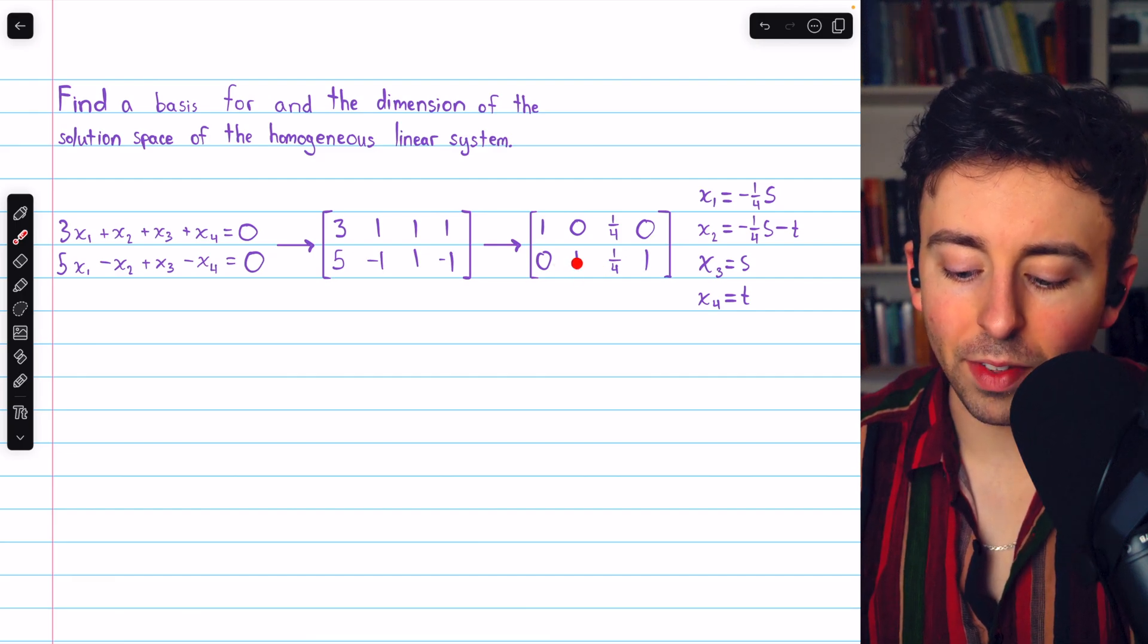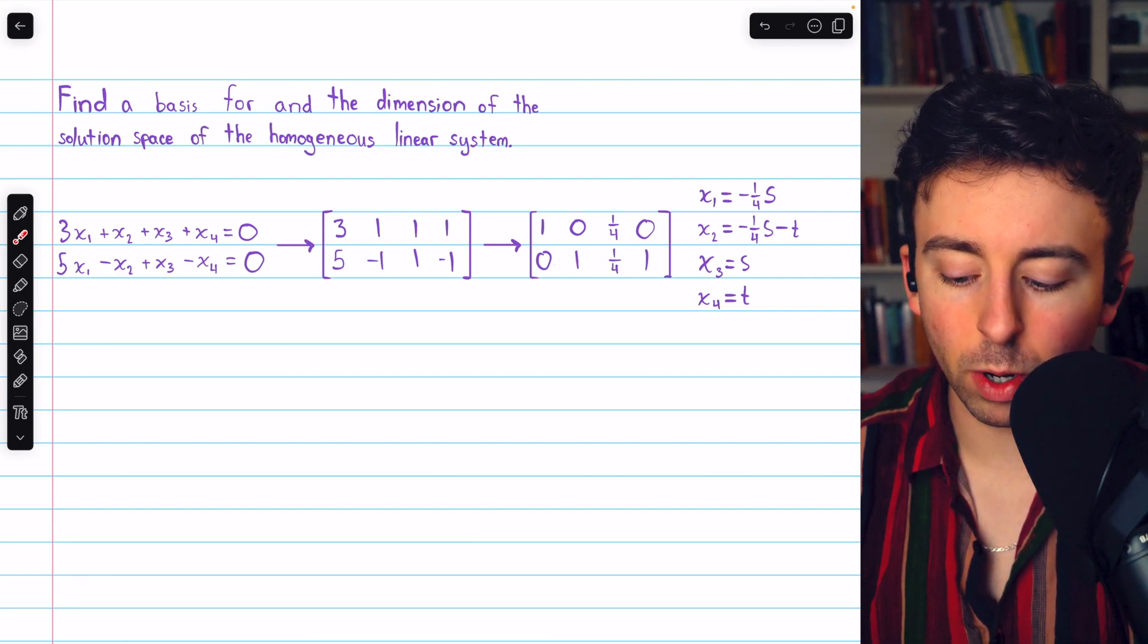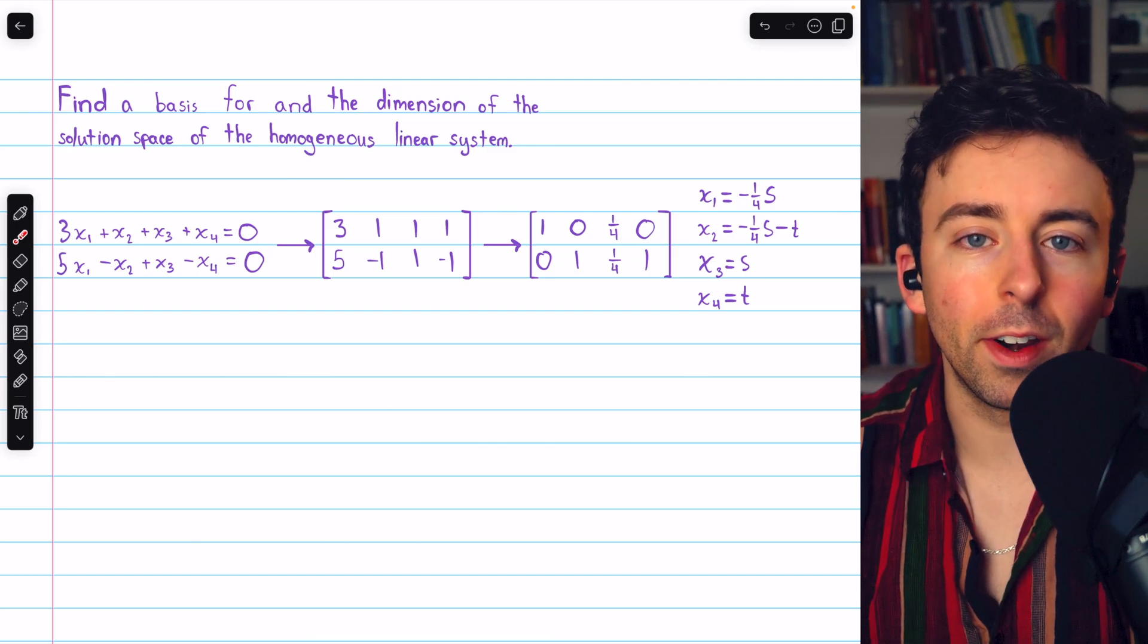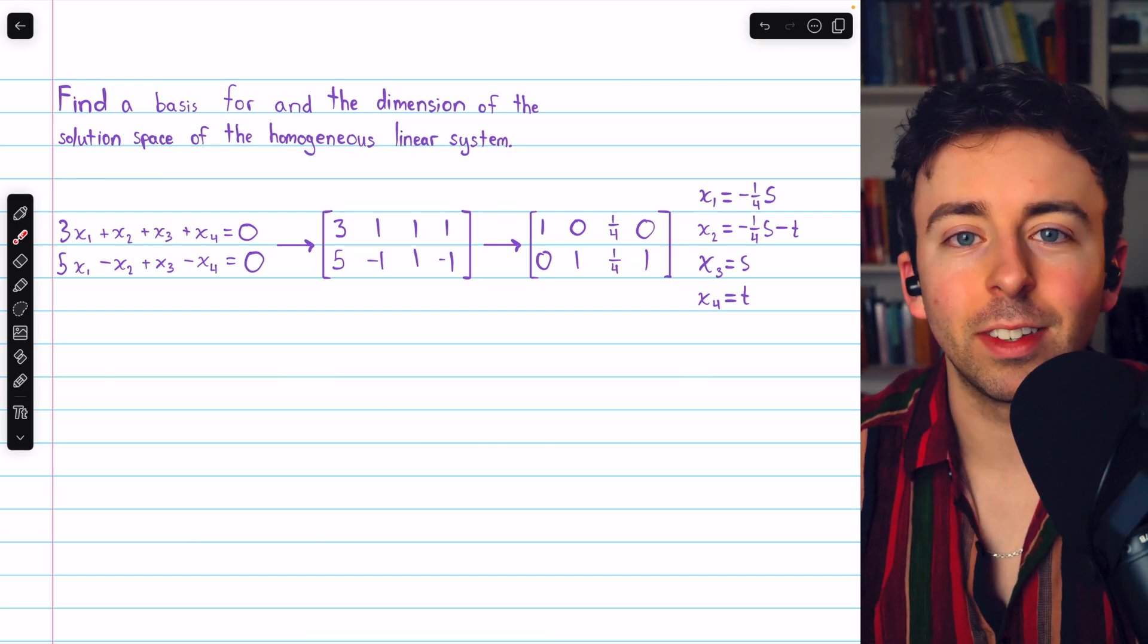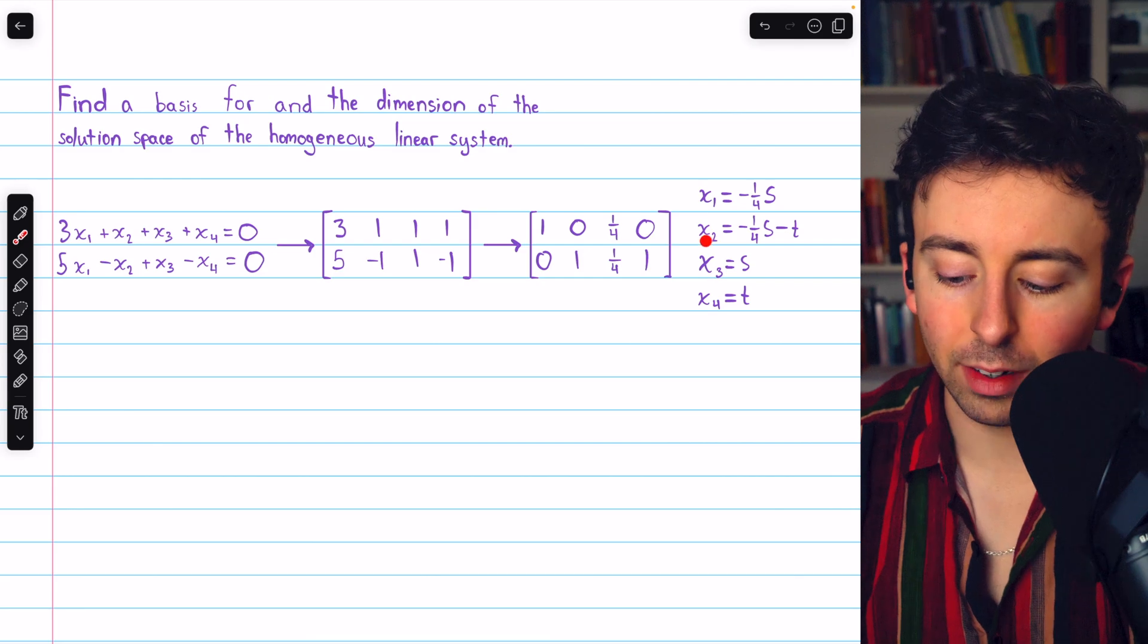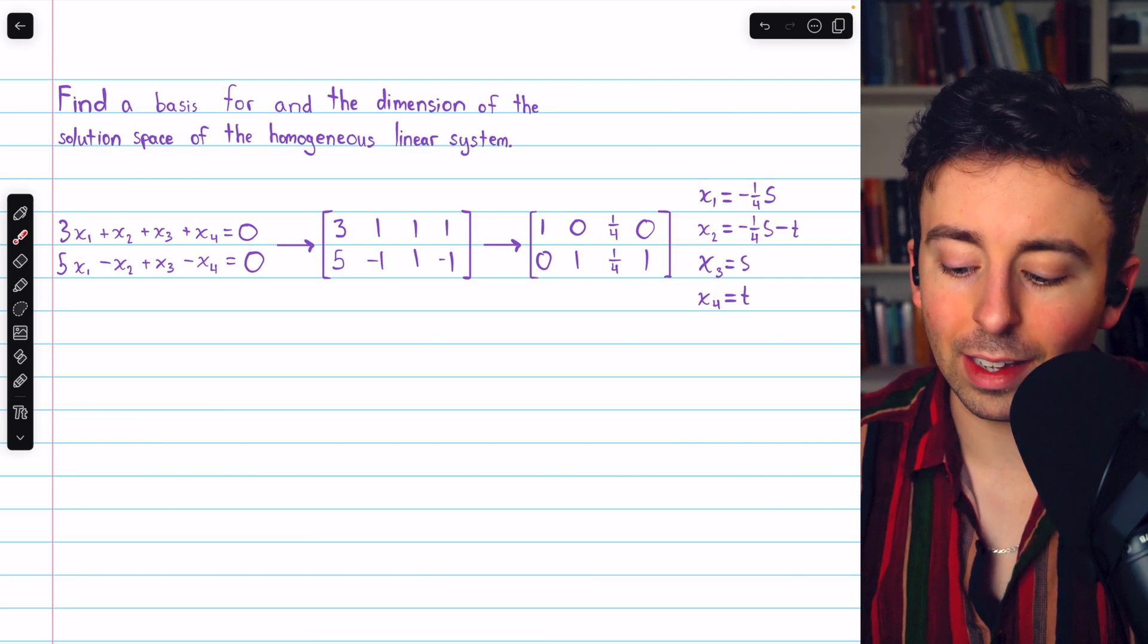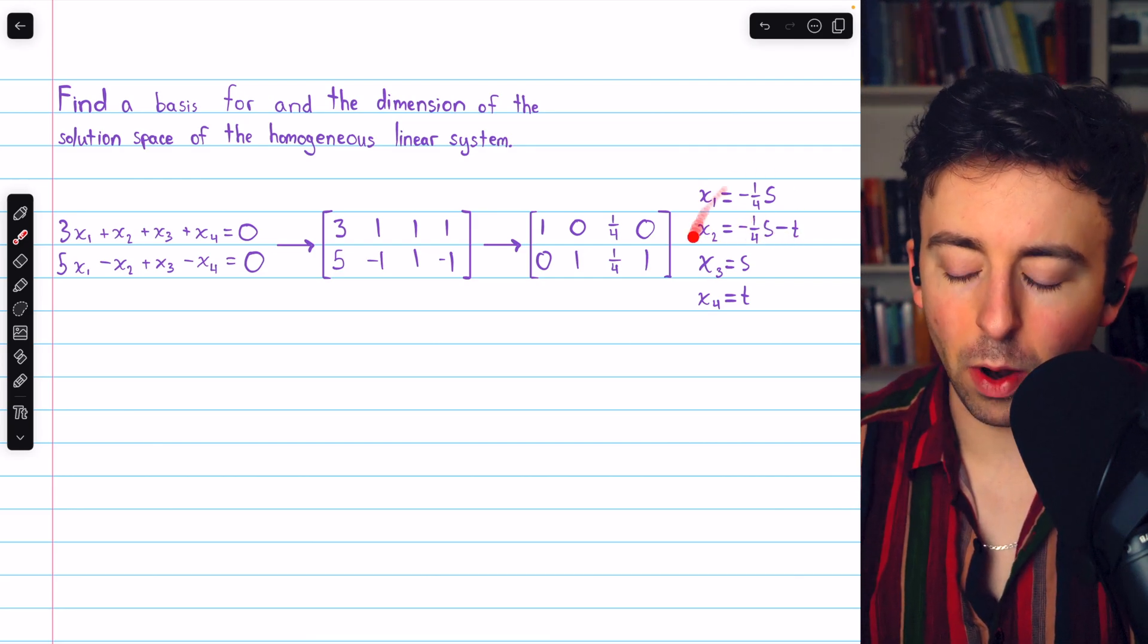From row 2, we have that x2 must equal negative one-fourth x3 minus one x4. But x3 is s and x4 is t, so x2 equals negative one-fourth s minus t. And there we go.